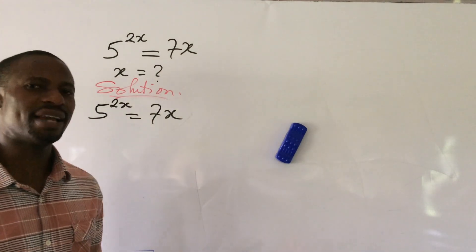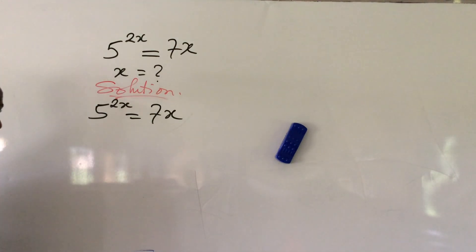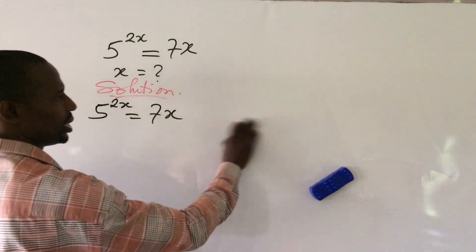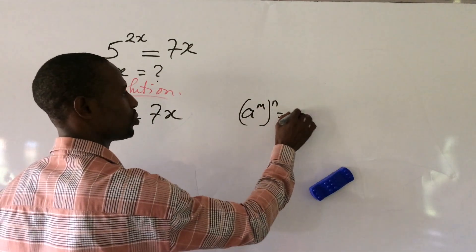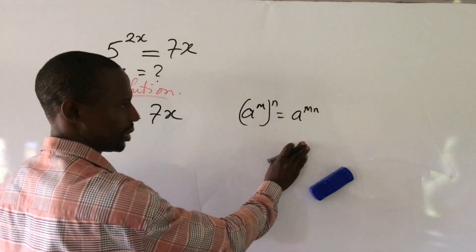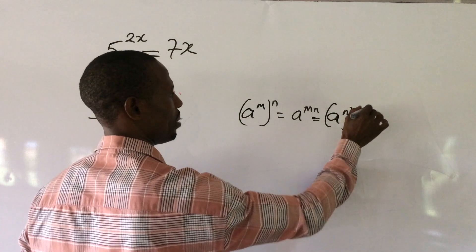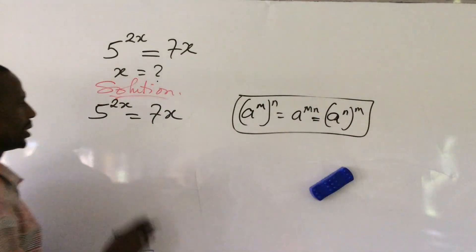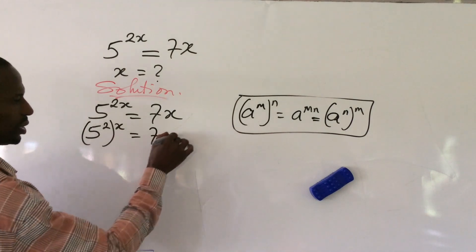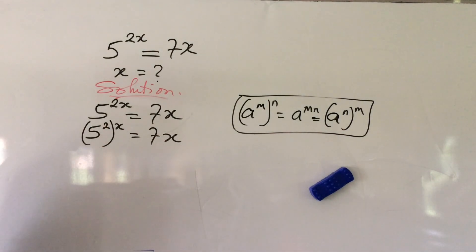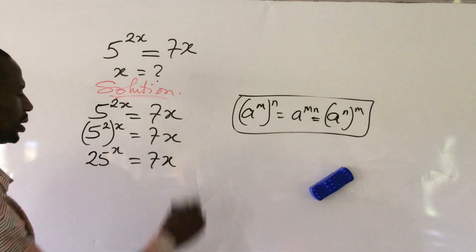Hence, we'll be making use of the Lambert W function. The first thing I'm going to do is rewrite the left-hand side of the equation. Recall the law of indices: a to the power of m times n equals a to the power of m, raised to the power of n. With this law in mind, we can rewrite this as 5 to the power of 2, all raised to the power of x, equal to 7x. Since 5 squared is 25, this gives us 25 to the power of x equal to 7x.